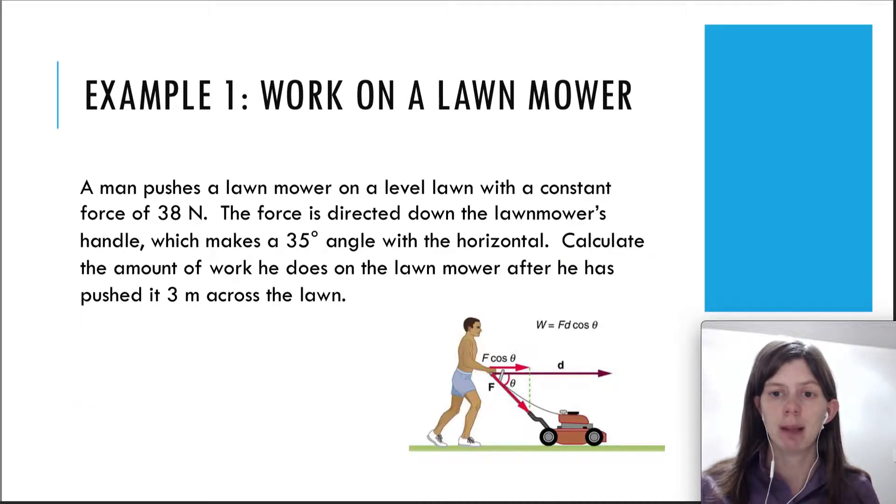So let's take a look at an example. A man pushes a lawnmower on a level lawn with a constant force of 38 newtons. The force is directed down the lawnmower's handle, and it makes an angle of 35, this theta here is 35 degrees. Calculate the amount of work he does on the lawnmower after he has pushed it three meters across the lawn. So there's a force being applied on the lawnmower and the lawnmower's moving to the right. So that means there's work being done on the lawnmower.